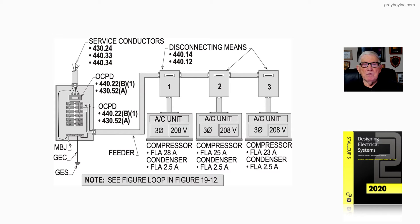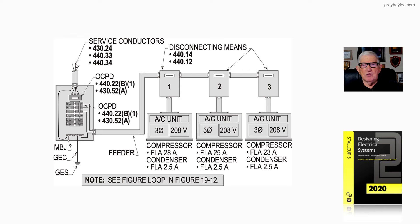The compressor is 28 amps and the condenser motor is 2.5 amps in Unit 1. Unit 2 has a 25-amp compressor and 2.5-amp condenser. Unit 3 has a 23-amp compressor and 2.5-amp condenser motor. These are the values we will use in illustration 19-11.